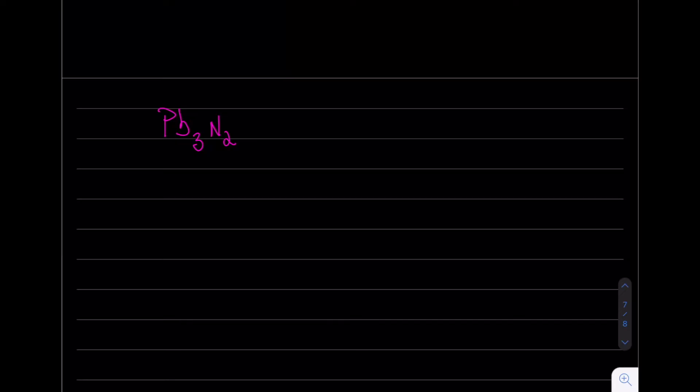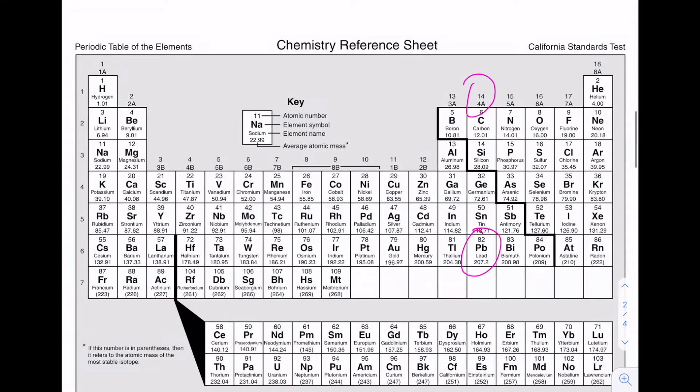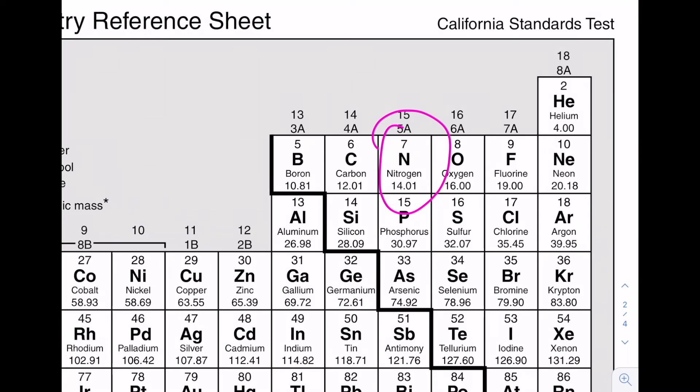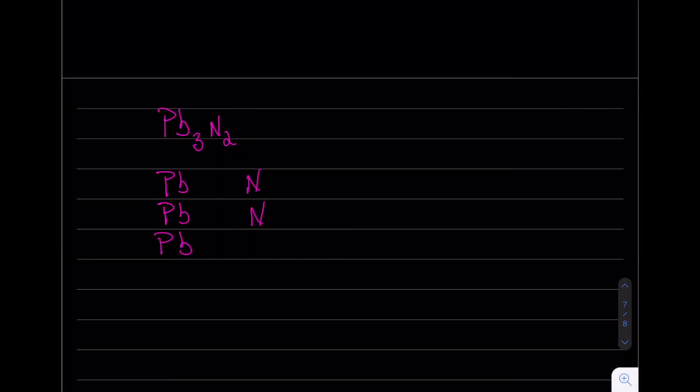So what we're going to do instead is figure out the charge on the anion. We're going to take this formula and break it apart. We have three leads and two nitrogens. Now we need to figure out the charge on the nitrogen. Nitrogen is right here. He is a non-metal, so he's going to gain electrons to become isoelectronic with a noble gas, specifically neon. He's going to go from 7 to 8 to 9 to 10 electrons. He's going to gain three electrons, giving him a 3- charge. So our two nitrogens are going to have a 3- charge.